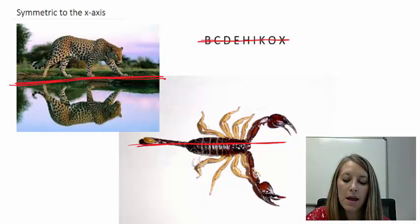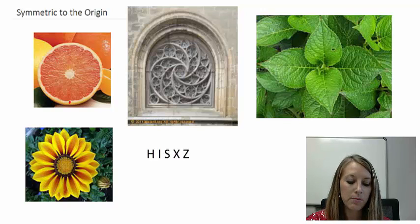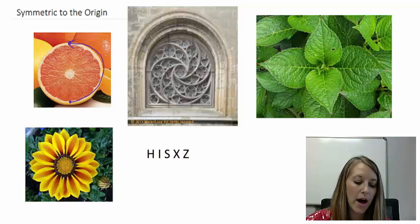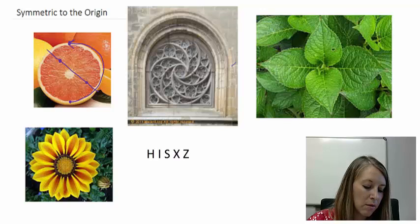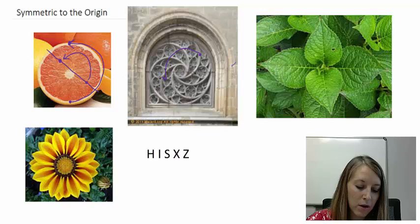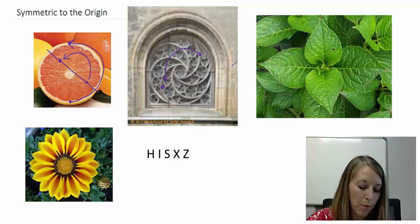The one that might be a little new to you is when something is symmetric to the origin. That doesn't mean I can fold it over an axis — it means I rotate it 180 degrees, or halfway around the circle, and it matches. All of these here are symmetric to the origin. If I were to take a point on one end and rotate it 180 degrees, it would match up with a point on the other end. I could take any point in my grapefruit, for example, rotate it halfway around the circle, and it would be the same as the point over there. Same thing with this cathedral window.